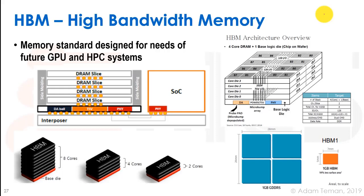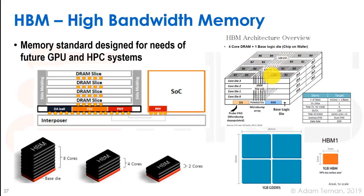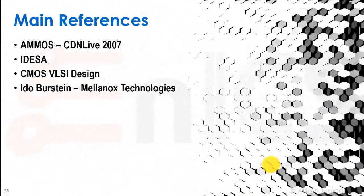HBM, or high bandwidth memory, is probably the main application being used today. Memory is the big bottleneck for high-performance systems — GPUs, networking chips, and so forth all need a large amount of memory. High bandwidth memory is a standard for connecting an SoC to DRAMs. As shown here, the SoC is placed on a silicon interposer alongside a stack of 3D-connected DRAM slices. There are configurations with two, four, or eight memory cores offering very high bandwidth.